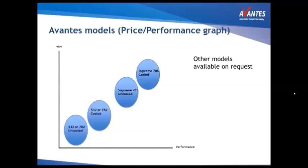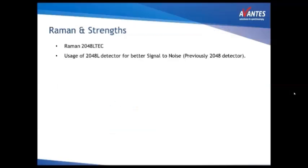Avantas offers different Raman system models depending on the application, with different lasers — 532 nm, 785 nm — and cooled and uncooled versions. There is also a Supreme version for very high performance. Each system has a certain price tag, allowing you to choose the right system for your application with the right price-performance relation.